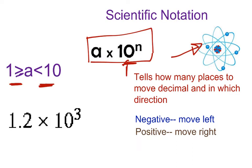How will you know the direction? You will know whether the exponent is negative or positive. If the exponent is negative, you move the decimal to the left. If the exponent is positive, you move the decimal to the right. Don't panic if you don't understand what I just said because we have some examples to express it.